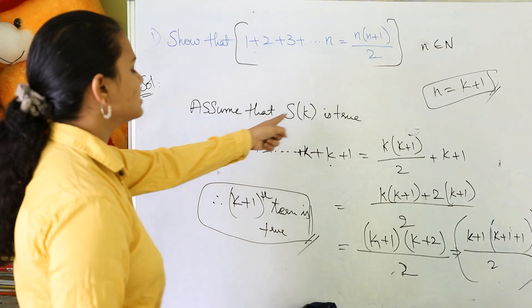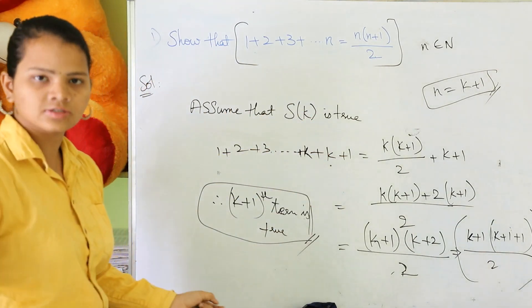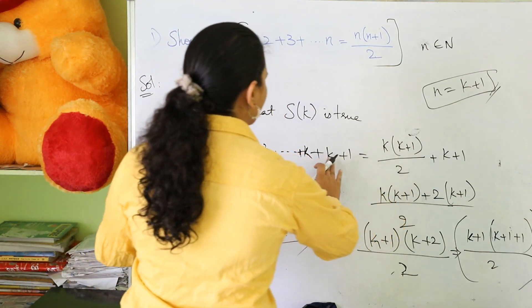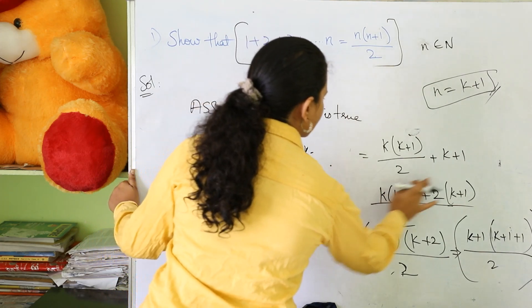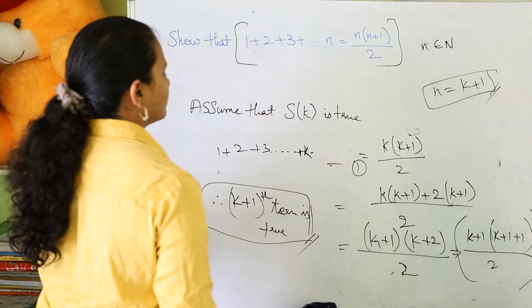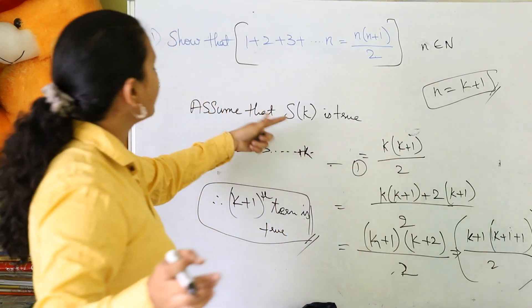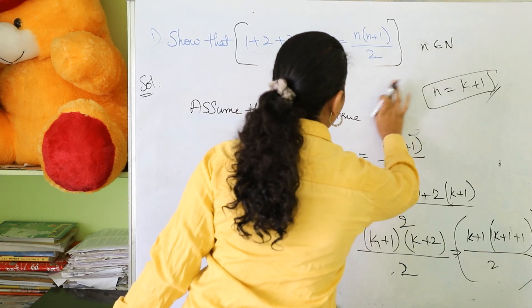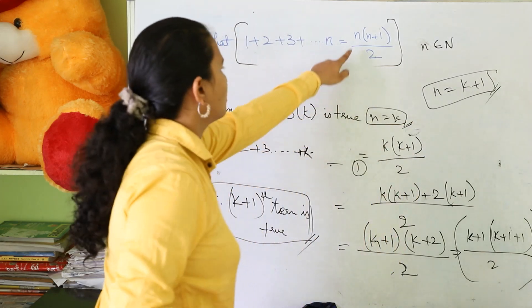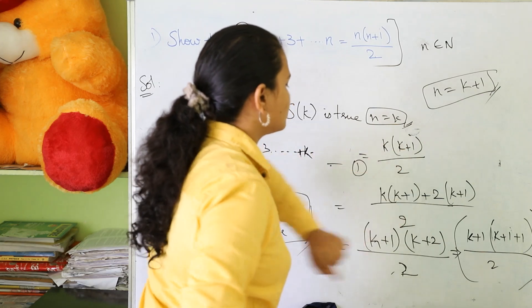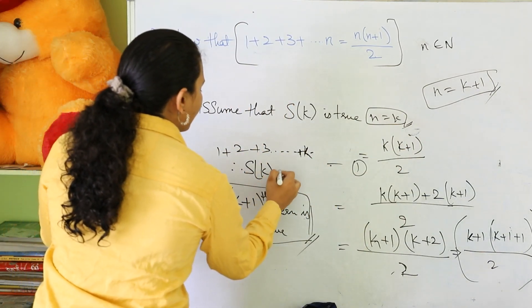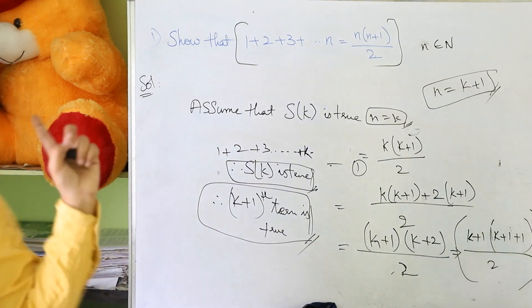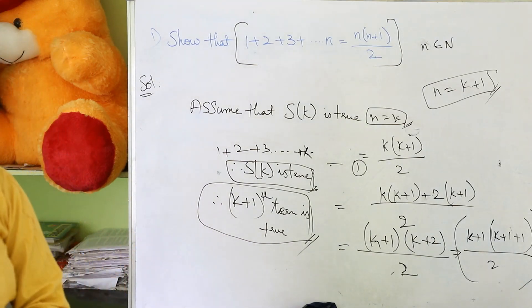We have assumed that S of K is true, and we have now proved that S of K plus 1 is also true. Therefore, S of 1 is true, S of K is true, and S of K plus 1 is also true. By the principle of mathematical induction, the statement is proved for all natural numbers. Thank you.